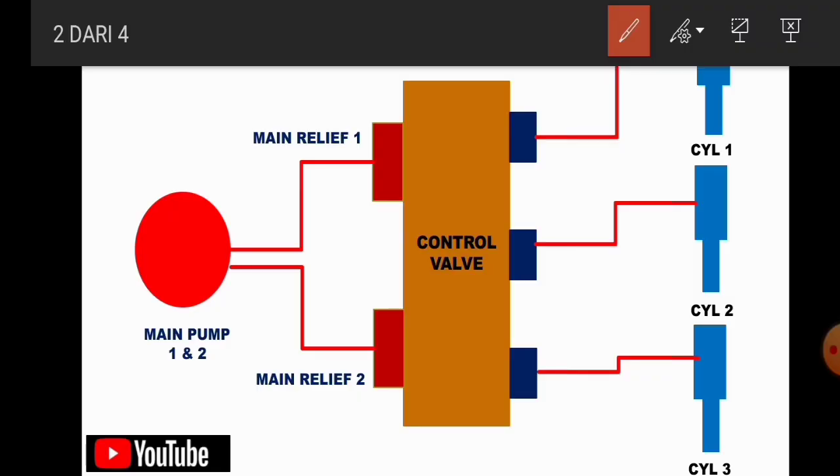Okay, here I will show you that there are several main components in the hydraulic system. The first is hydraulic pump or the main pump. The second is control valve, where control valve is going to distribute the hydraulic oil to the actuator. Then the last is cylinder.